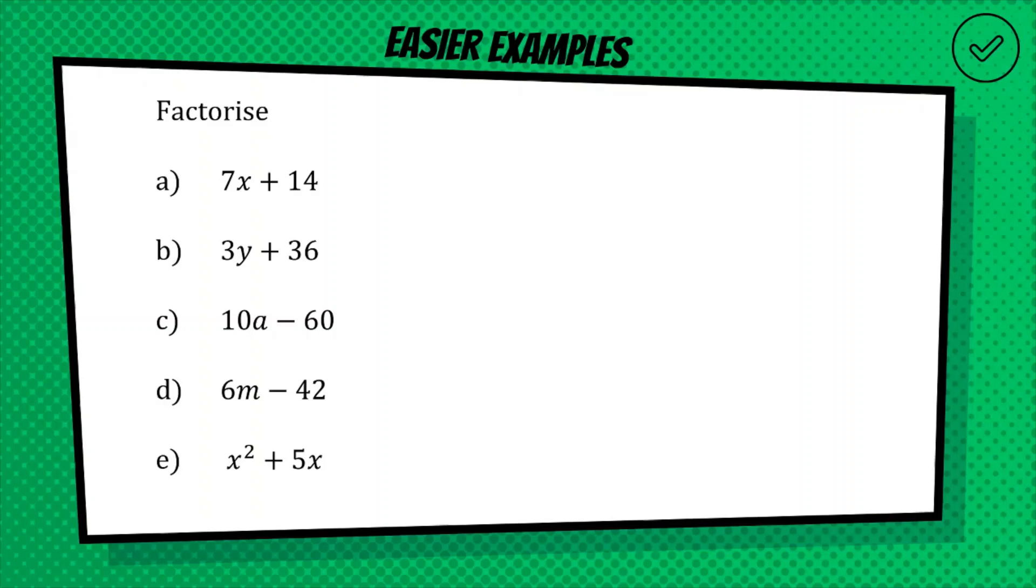All right, so for the first one, we're looking at 7x, and we're looking at 14, and we're thinking, what's something that is going to multiply into both of these two? Hopefully you can see that answer is 7, because we have 7 times x here, and we have 7 times 2 here. So because this is 7 times x, we're going to have an x here, and because this is 7 times 2, we're going to have a plus 2 in the brackets.